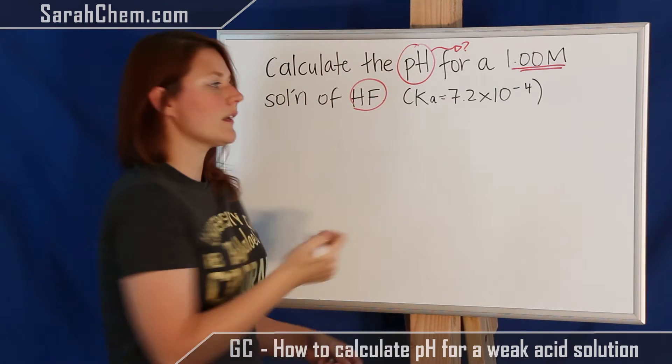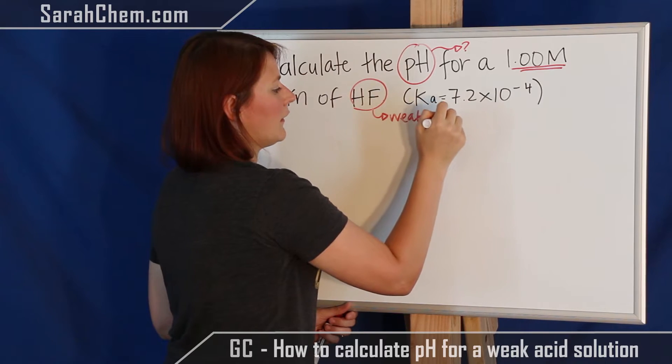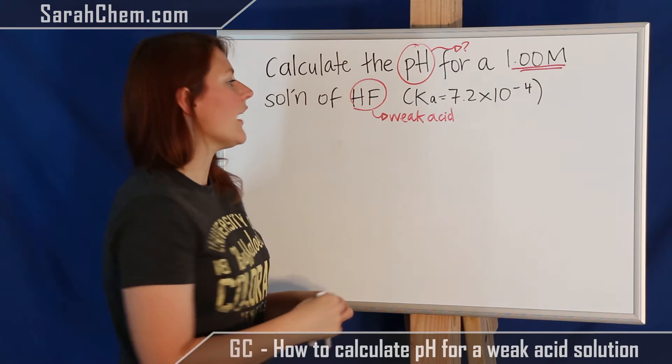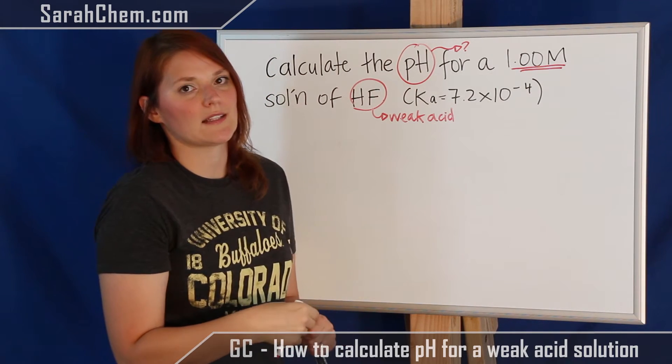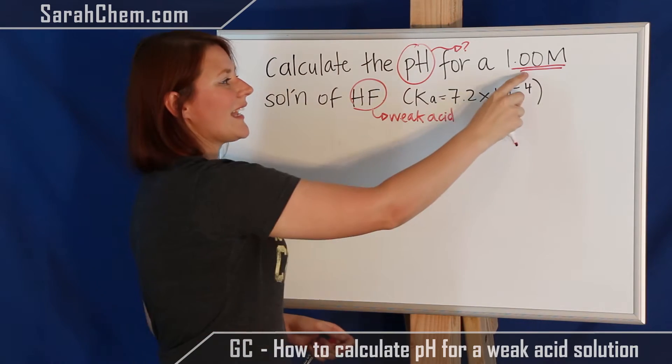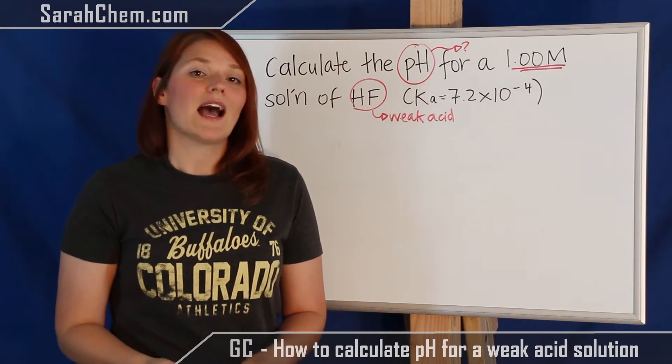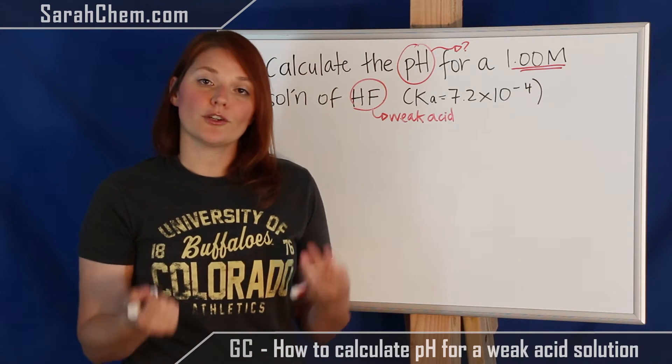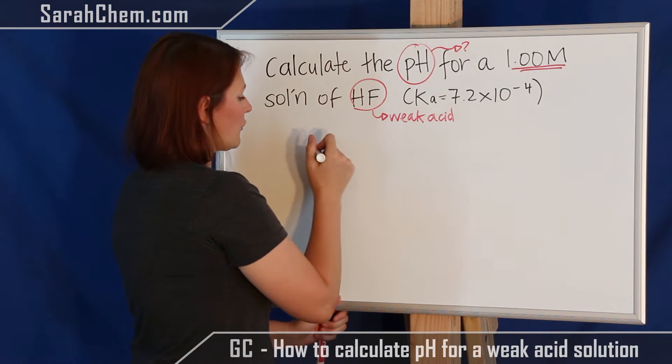So the first thing we need to recognize is that HF is a weak acid. We know it's not on the strong acid list of seven that we have, and additionally we know because we're given a Ka less than one that it has to be a weak acid as well. So that means I can't just plug in this 1.00 M for the concentration of H+. I need to figure out what the concentration would be at equilibrium. In order to do that, we need to use an ICE chart.